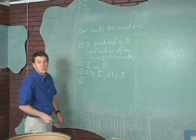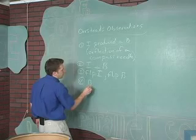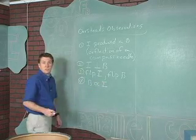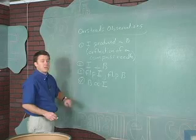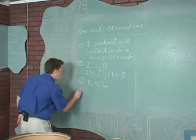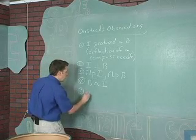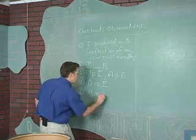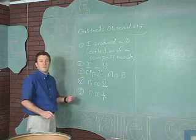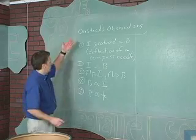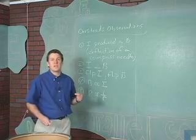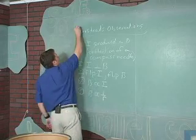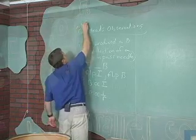Two more observations showed that the magnetic field was directly proportional to the current. So if the current went up, the strength of the magnetic field went up. And also the magnetic field was inversely proportional to the radial distance away from that current carrying wire. These are the main observations made by Hans Christian Ørsted in approximately 1819.